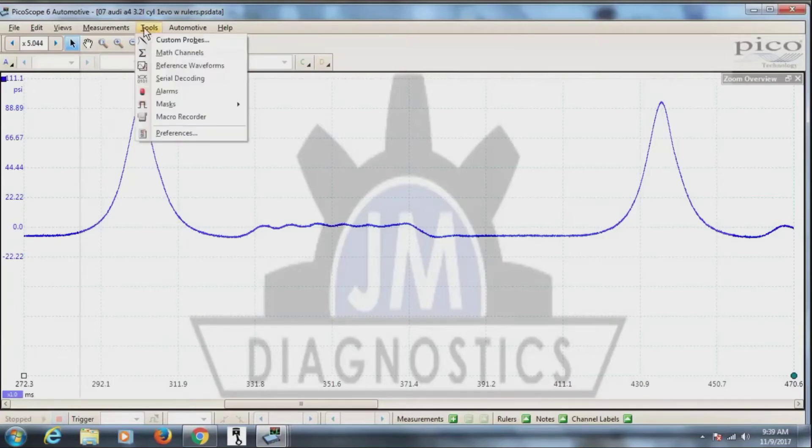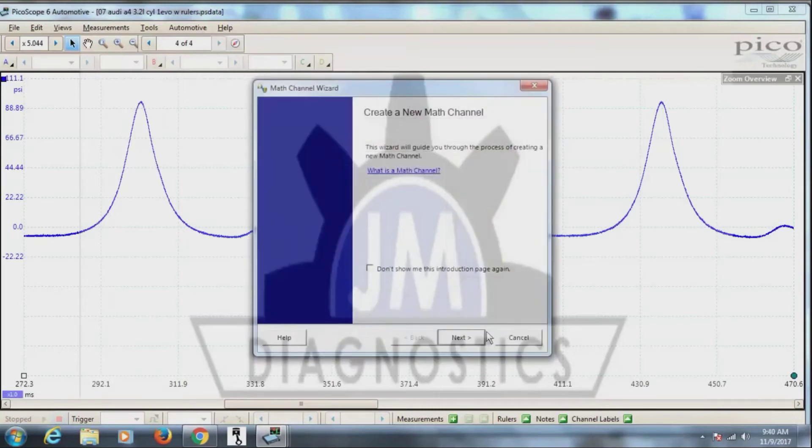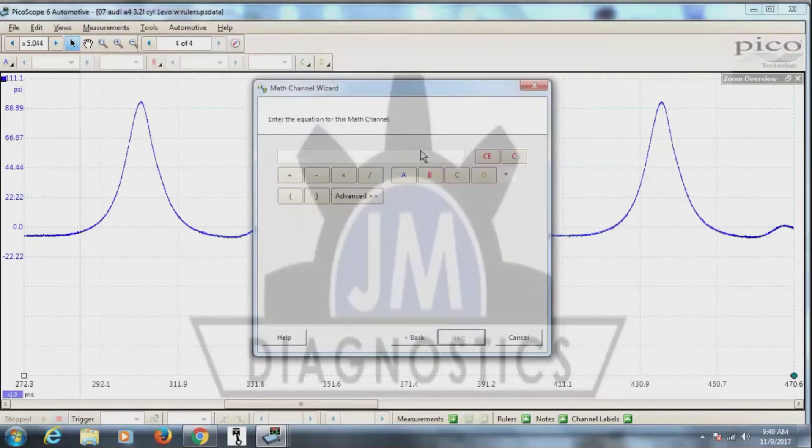What you want to do is go up to your tools here, go to your math channels. You have an invert. You can choose what you want to invert. What we want to do is we want to create. So we'll go here and then we pick which channel we want and we have to tell it we want it to be minus A.